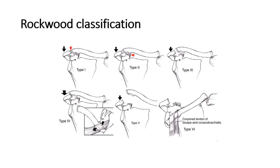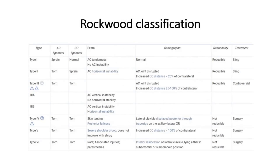The Rockwood classification is used to classify AC joint injuries. Type 1 is an AC sprain with normal CC and a normal radiograph. Type 2 is a torn AC and sprained CC, with AC horizontal instability. Type 1 and 2 are treated with conservative management. Type 3 is both AC and CC torn; treatment depends on the situation and is controversial — conservative versus operative.